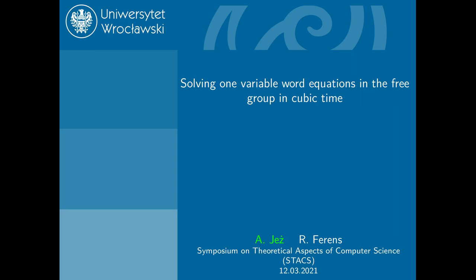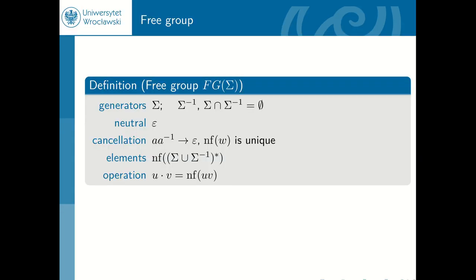Hello, I'm Artur Riesch. This is a work about solving one-variable word equations in free groups, and this is a joint work with Robert Clarence, who is my PhD student.